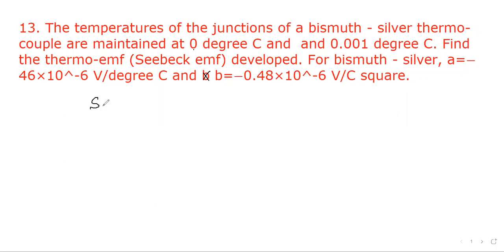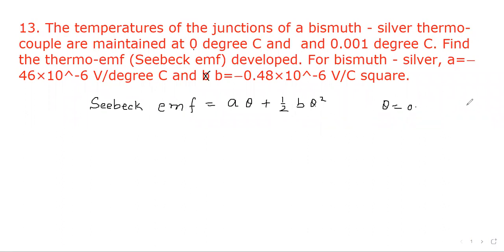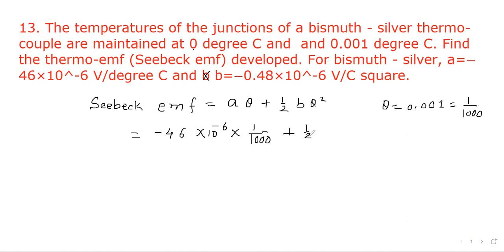We know that thermo-EMF equals A·θ plus half B·θ², where θ is the temperature of the hot junction. Here θ is given as 0.001 degree centigrade. We put A equal to minus 56 into 10 to the power minus 6 into (1/1000), plus B equal to minus 0.28 into 10 to the power minus 6 into (1/1000) squared.